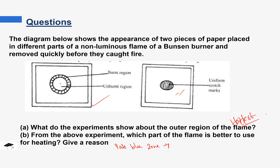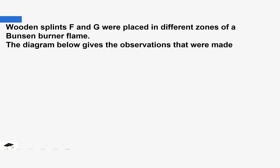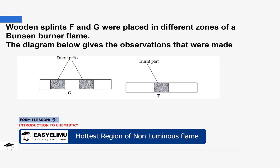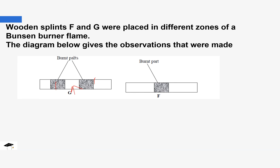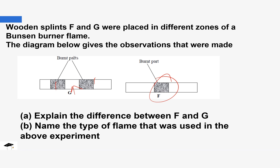The best part to use for heating is the pale blue zone. The reason it is the best is because it is the hottest. You can go further and explain that it is hot because there is complete combustion that occurs in this region. Next, wooden splints F and G were placed in different zones of a Bunsen burner flame. The first observation shows the burnt and unburnt parts, and in F we have uniform burning. Question: Explain the differences between F and G. In F there was uniform burning, while in G there were some parts that were not burnt.